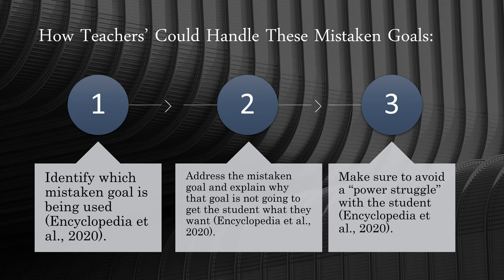Dreikurs had a few suggestions for how teachers could handle these mistaken goals. First, identify which mistaken goal is being used. Second, address the mistaken goal and explain why that goal is not going to get the student what they want. And third, make sure to avoid a power struggle with the student.